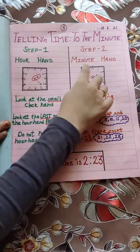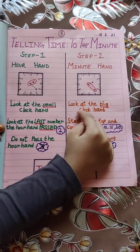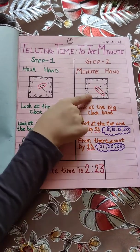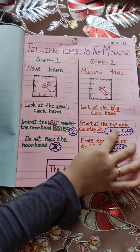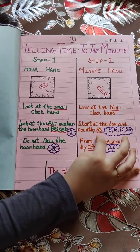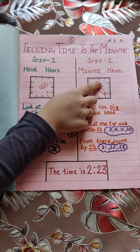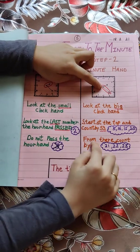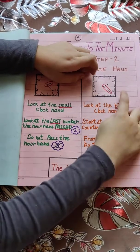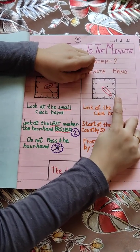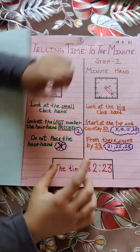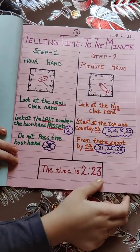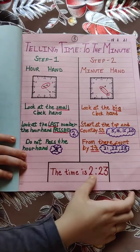Now in step two, we will see the minute hand. Look at the big clock hand. Start at the top and count by five: zero, five, ten, fifteen, twenty. From there, count by one: twenty, twenty-one, twenty-two, twenty-three. The time is two twenty-three — twenty-three past two.